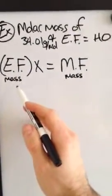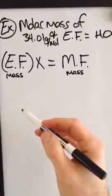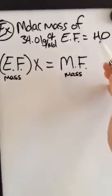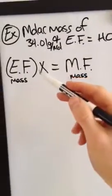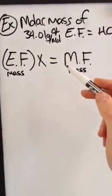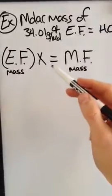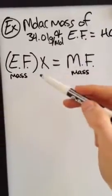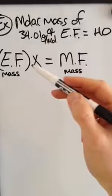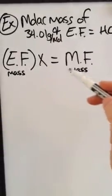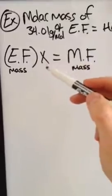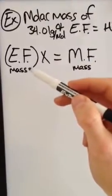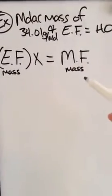Now if you are given percentages, you first have to find the empirical formula. Then you substitute into the equation the correct values to solve for X. Plug X back into the equation where instead of using the masses of the formulas, you actually use the formulas themselves. Distribute the X through to find your molecular formula.